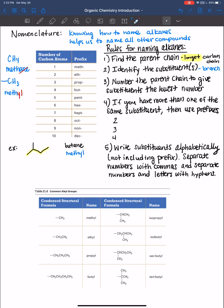Then you want to number the parent chain to give the substituents the lowest number. And so in this case here, we want to number from left to right. One, two, three, four. You can number from either end of a parent chain, but in this case here, we want to give the substituent the lowest number. And so we want to number from left to right. Otherwise, the methyl group, if we numbered from right to left, it would have been one, two, three. And that wouldn't have given the methyl group the lowest number.